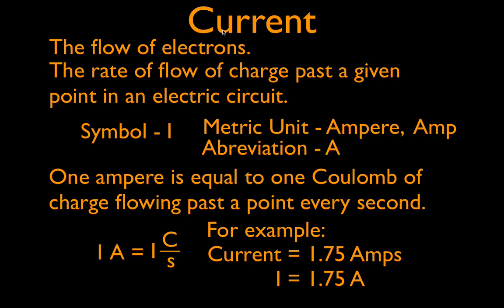When we talk about current, we use the symbol I, as in V equals I times R. The symbol for voltage is V, which is more straightforward, but the symbol for current is I. The metric unit for current is the ampere, which we often abbreviate as amp.